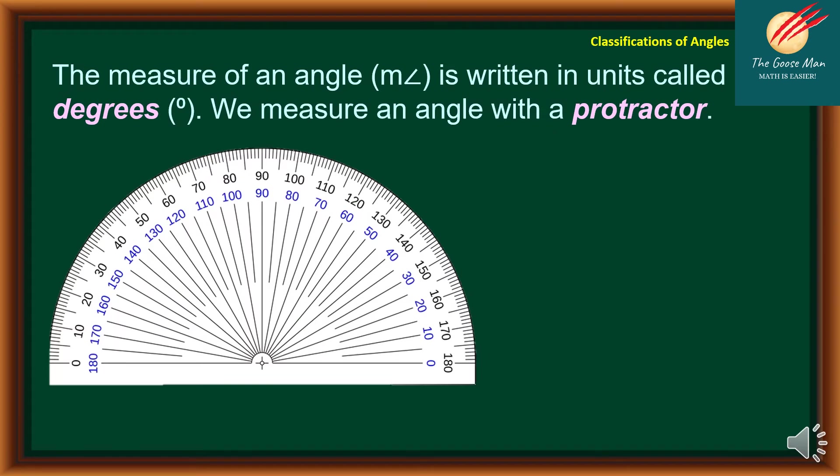Note that the measure of an angle is written in units called degrees. We measure an angle with a protractor, which is our example in our illustration. The zero on the right side is what we call inner scale, while the scale outside is what you call outer scale.